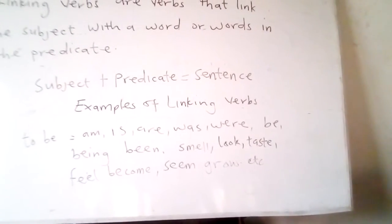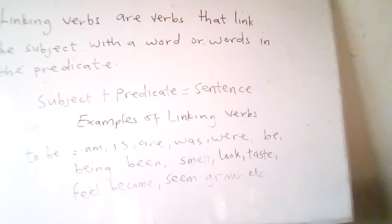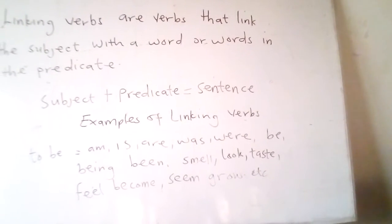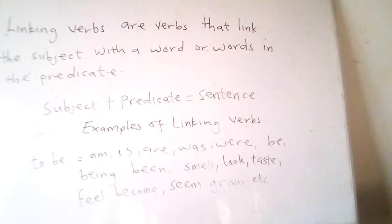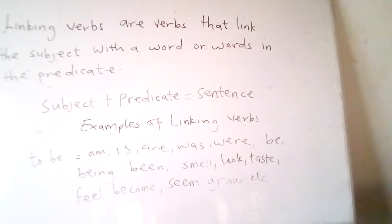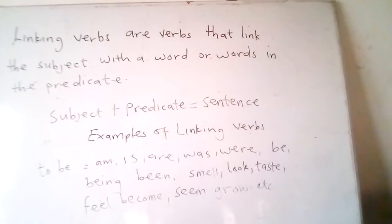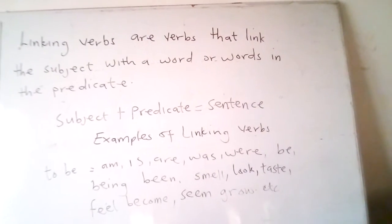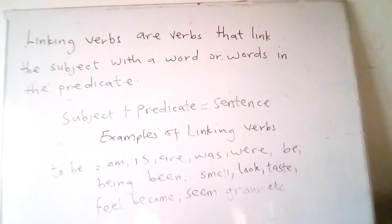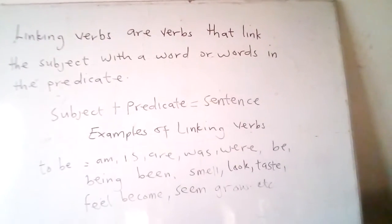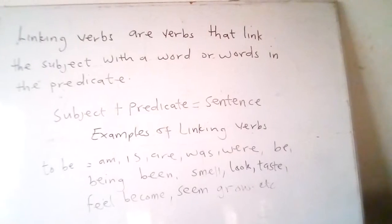Examples of linking verbs in sentences: 'The principal grew impatient as the truant boy kept challenging him' — 'grew' links 'principal' and 'impatient'. 'This story sounds fictitious or untrue' — 'sounds' links 'story' and 'fictitious'. 'I am a lecturer' — 'am' links 'I' and 'lecturer'. 'The flowers look nice' — 'look' links 'flowers' and 'nice' in the predicate.